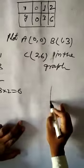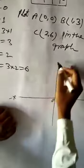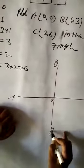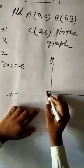Horizontal line is called X axis. X, origin, minus X. Vertical line is called Y axis. 0 comma 0. This is 0 comma 0.